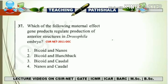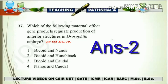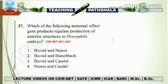Let's take one question from CSIR-net 2011: Which of the following maternal effect gene products regulate production of anterior structures in a Drosophila embryo? Option 1 is bicoid and nanos — eliminated because nanos is present in the posterior. Option 2 is bicoid and hunchback — this is the correct answer, as both are present in the anterior portion and regulate formation of the anterior axis. Option 3 is bicoid and caudal — eliminated, since caudal is for posterior. Option 4 is nanos and caudal — these are for the posterior axis. The correct answer is bicoid and hunchback.